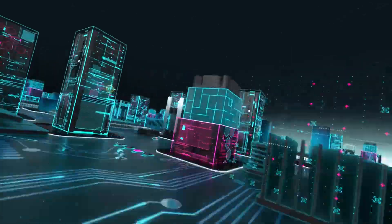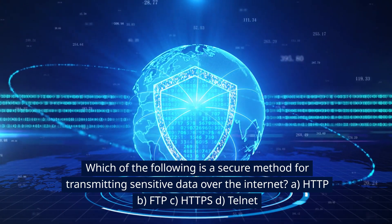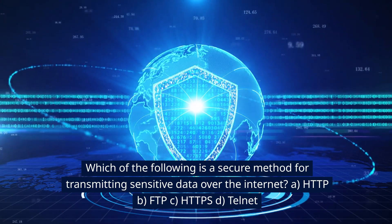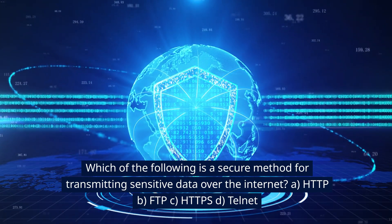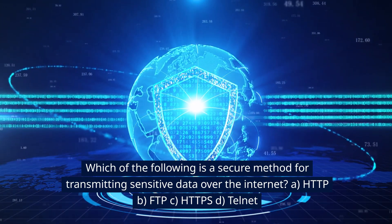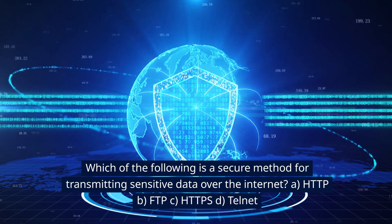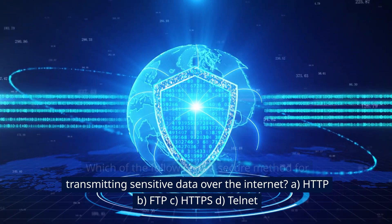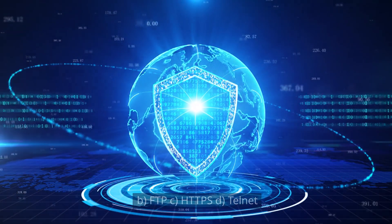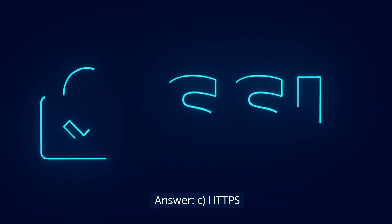Which of the following is a secure method for transmitting sensitive data over the internet? A. HTTP. B. FTP. C. HTTPS. D. Telnet. Answer: C. HTTPS.